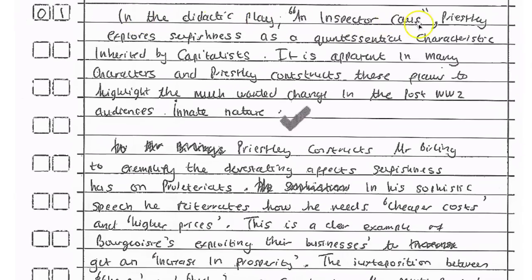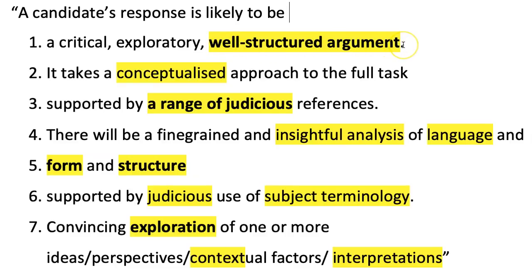In the didactic play An Inspector Calls, Priestley explores selfishness as a quintessential characteristic inherited by capitalists. It is apparent in many characters and Priestley constructs these flaws to highlight the much-wanted change in the post-World War II audience's innate nature. He sets out a clear thesis here as to why Priestley is writing about capitalism and how he wants the audience to change. As long as he proves that in the essay, he'll have a very well-constructed argument — number one on the examiner's checklist — and a conceptualised response argued all the way through.